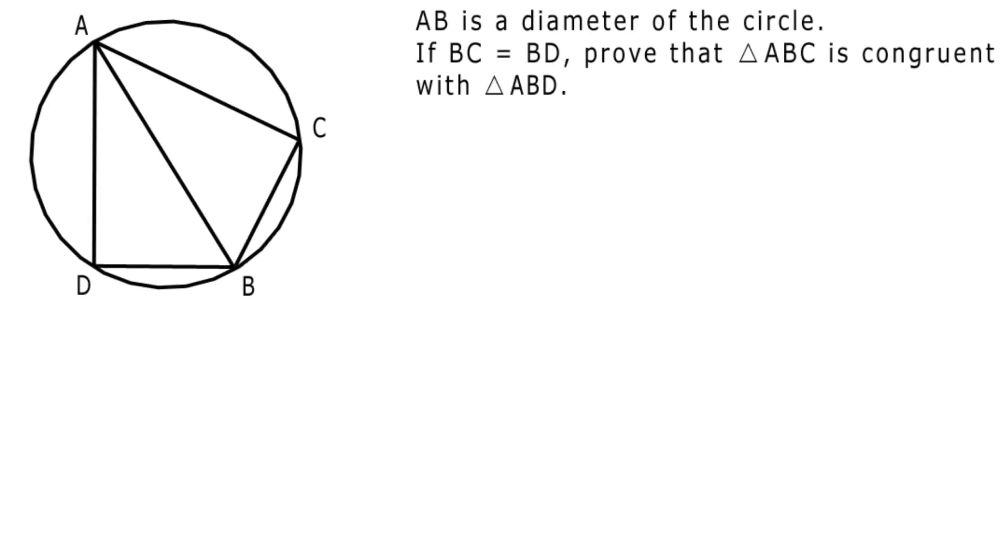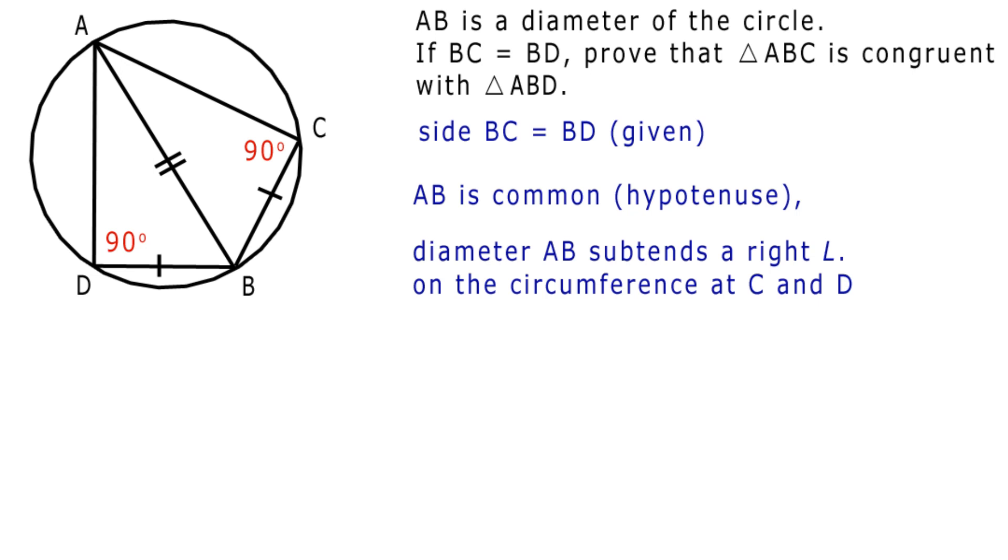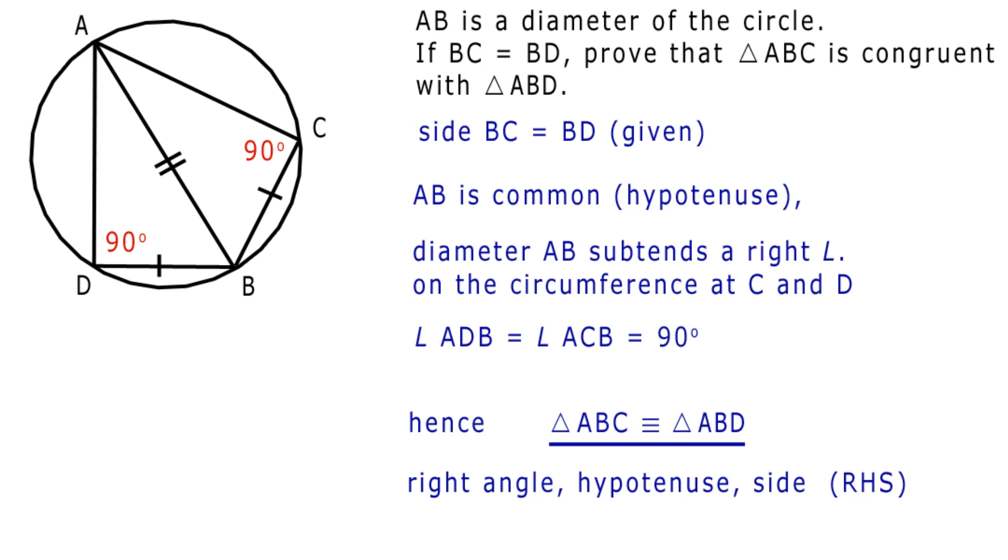AB is a diameter of the circle. If BC equals BD, prove that triangle ABC is congruent with triangle ABD. Well, side BC equals BD, given. AB is common. It's the hypotenuse. Diameter AB subtends a right angle on the circumference at C and D. Angle ADB equals angle ACB, which equals 90 degrees. Hence, triangle ABC is congruent to triangle ABD. We have a right angle, hypotenuse, and a side: RHS.